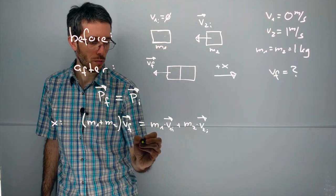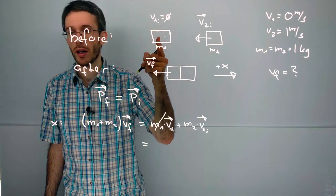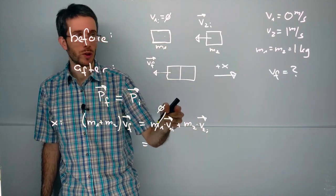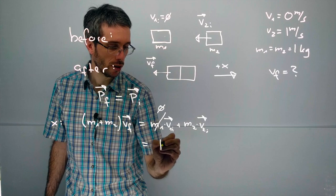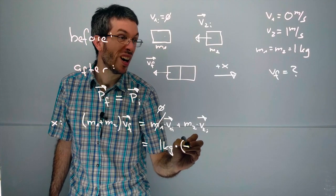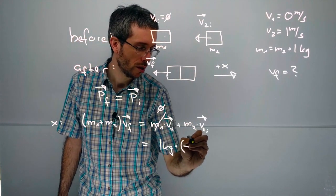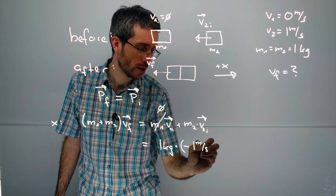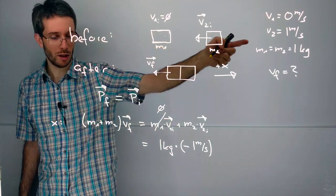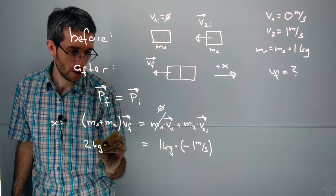Now if I plug in the numbers for the right side I'm going to have 0 for my initial momentum of object 1. So I only have the momentum of object 2, so I have 1 kg times minus, because I'm going against my x coordinate system, 1 m per second. And on the left side I have my total mass so 1 kg plus 2 kg is 2 kg.